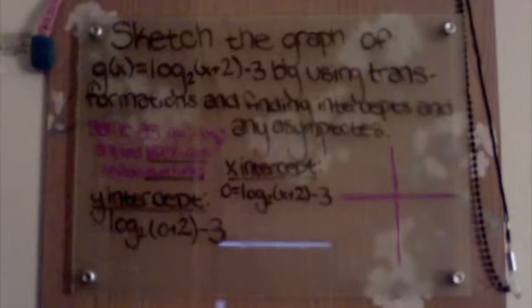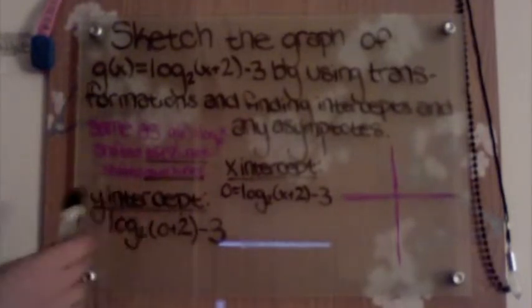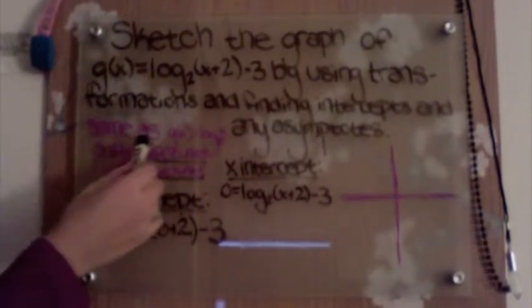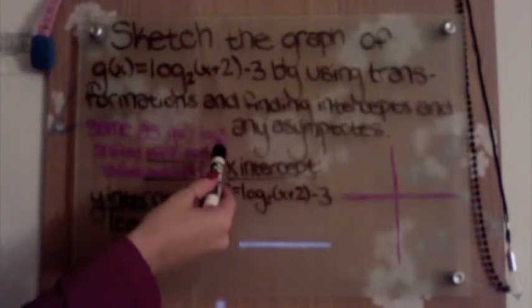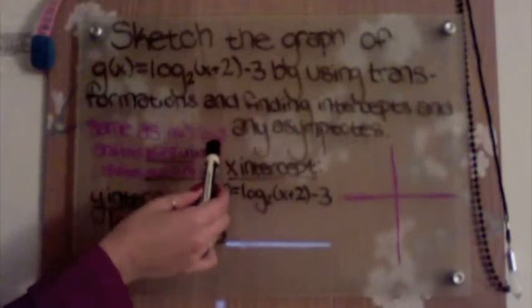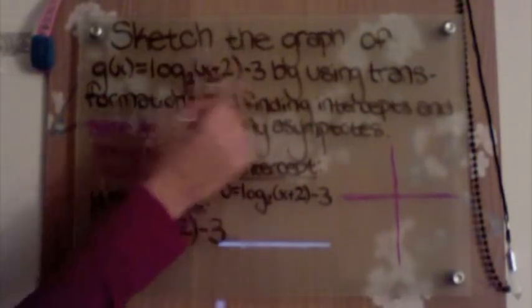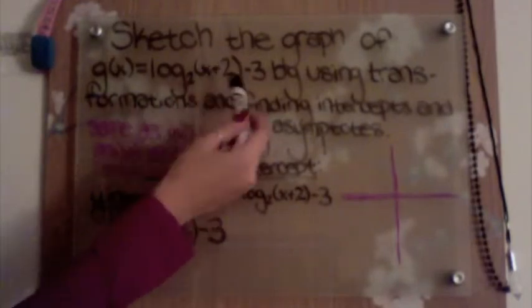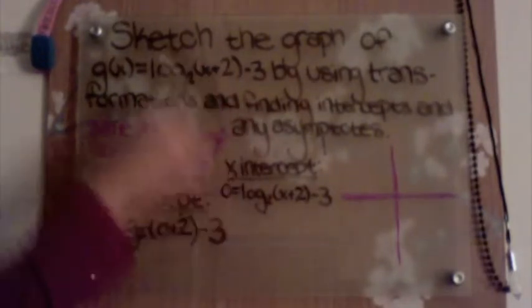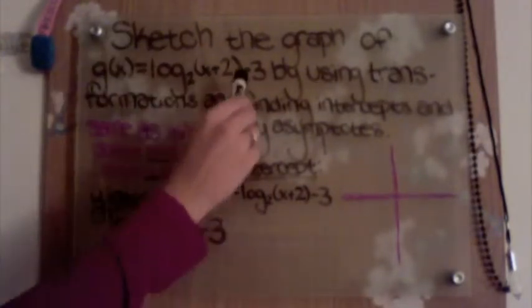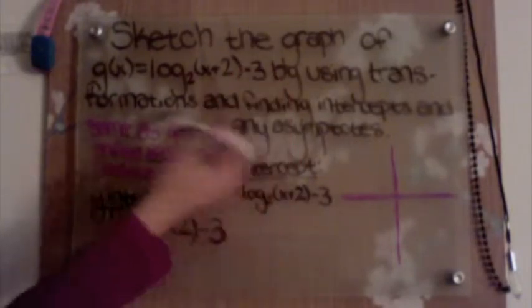We'll start by doing transformations. We always start off with the parent graph, which would be g(x) = log base b of x. So we start with the same as g(x) = log base b of x. We shift it to the left 2 units because in parentheses here we have plus 2, which makes us go left 2. Then we have minus 3, which will shift our graph down 3 units.